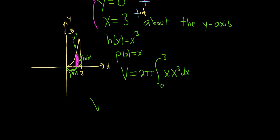So this is equal to 2 pi, the integral from 0 to 3. Now what we can do is we can multiply these x's and add the exponents. That will give us x to the 4th dx.